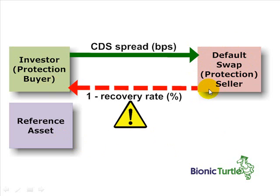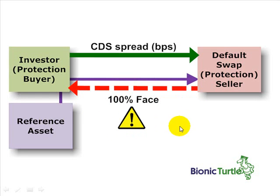Here I've illustrated the cash settlement. There can be either a cash or a physical settlement. If there is a credit event, the default swap seller — because he or she has been collecting premiums along the way — must pay one minus the recovery rate to the protection buyer; that's the cash settlement. More common is the physical settlement, in which case the CDS buyer must physically deliver the reference asset to the swap seller, and the swap seller then has to pay in cash 100% of the face value.